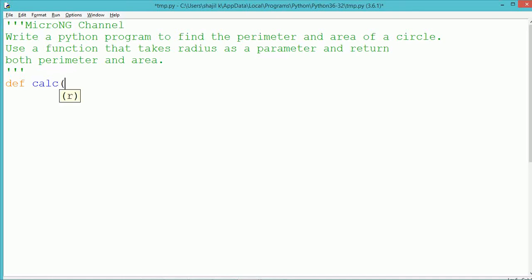Hello, this tutorial discusses a Python program to find the perimeter and area of a circle using a function. This function should take radius as a parameter and return both the perimeter and area values.